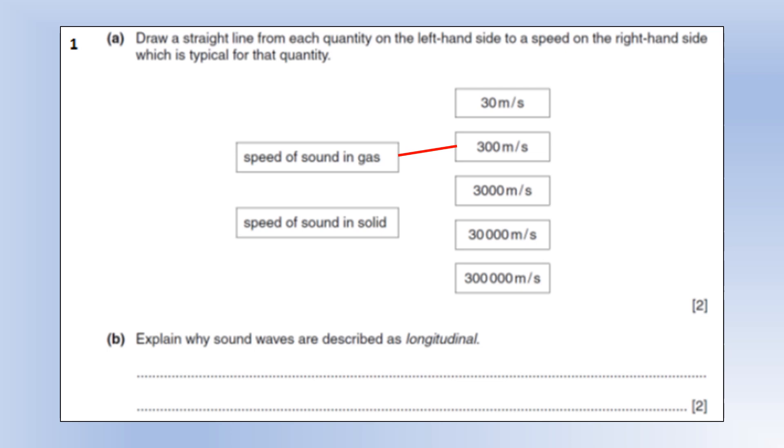The speed of sound in solid is quite a bit faster. In a lot of solids it's usually quoted as being like four thousand, five thousand, something like that, so I'm going to go with the three thousand answer here. Then liquid is somewhere in between those two values, usually quoted as high hundreds or low thousands. So explain why sound waves are described as longitudinal. Well, the sound waves cause particles of the medium to oscillate parallel to the direction of energy transfer, so it creates regions of compressions and rarefactions when it does that.